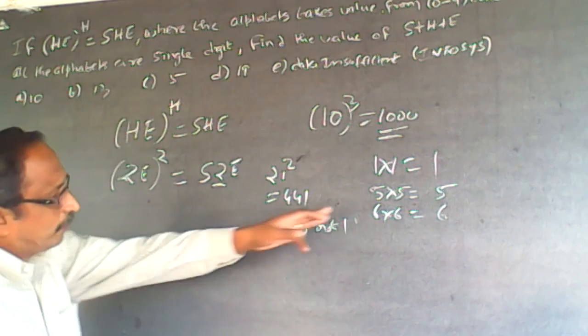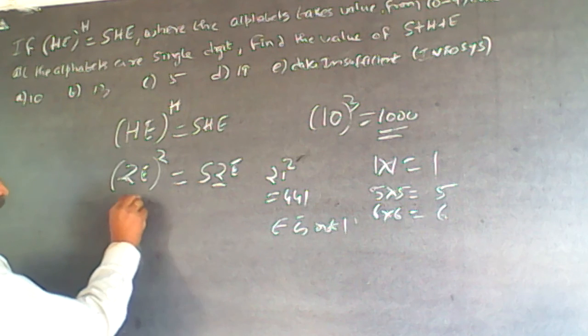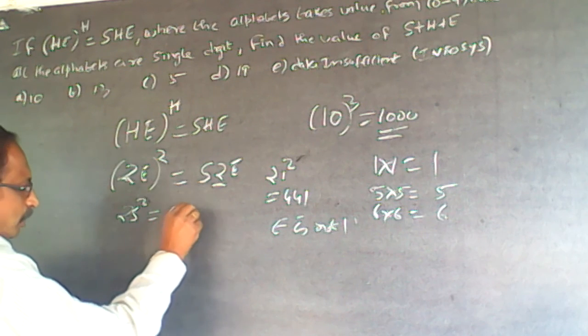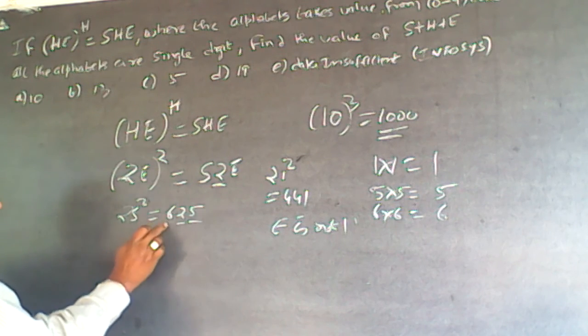Then supposing the other number is 5. So E is 5. 25 square is 625. So this is magic. This is magic. Only this, nothing happened on 625.